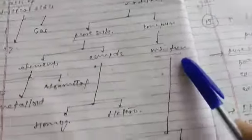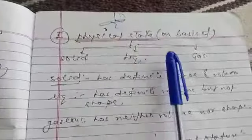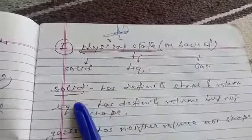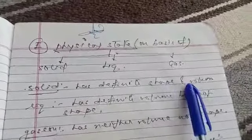Impure substances are called mixtures. Mixtures are also homogeneous and heterogeneous. On the basis of physical state, there are three types: solid, liquid, and gas. Solids have definite shape and definite volume, liquids have definite volume but do not have shape, gases have neither volume nor shape.